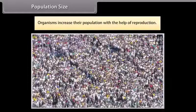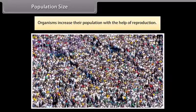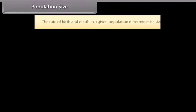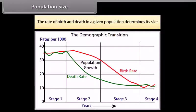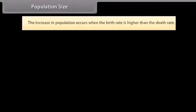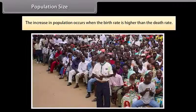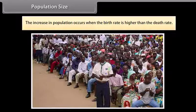Population size: Organisms increase their population with the help of reproduction. The rate of birth and death in a given population determines its size. The increase in population occurs when the birth rate is higher than the death rate.